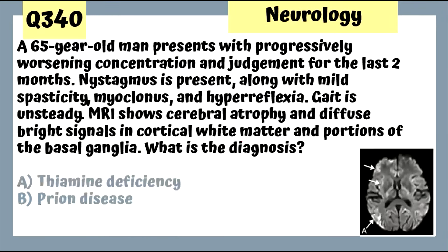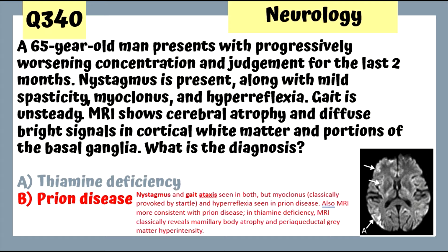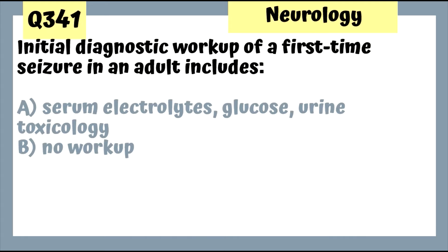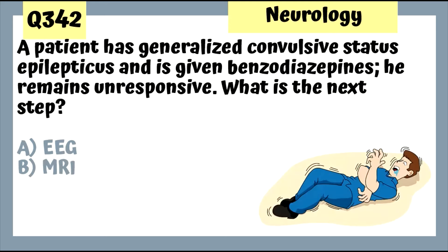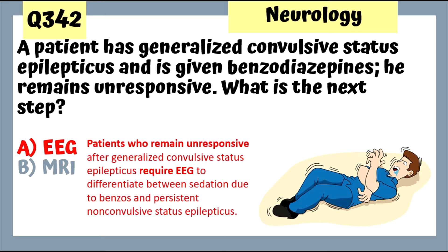Question 340: A 65-year-old man with progressively worsening concentration and judgment, nystagmus, mild spasticity, myoclonus, and hyperreflexia — this is prion disease. Question 341: Initial workup for a first-time seizure in an adult includes electrolytes, glucose, and toxicology. Question 342: A patient with generalized convulsive status epilepticus given benzodiazepines remains unresponsive — get an EEG to determine if unresponsiveness is due to sedation from the benzos or persistent seizure.